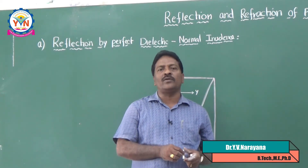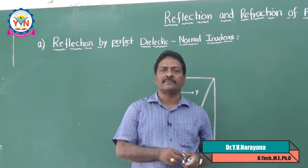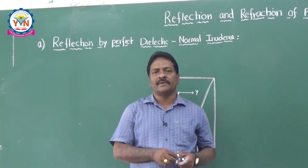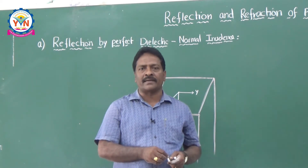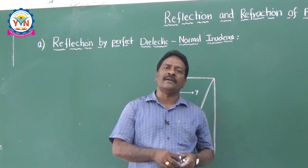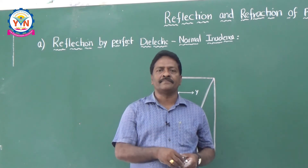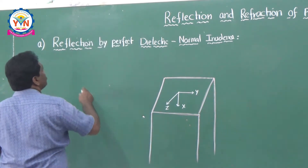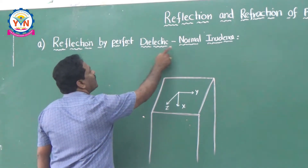In this class we are going to discuss the reflection of electromagnetic waves by a perfect dielectric at normal incidence. We have already discussed the normal incidence case for a perfect conductor, where we concluded that whenever electromagnetic waves hit the surface of a conductor, the entire wave is reflected back. Now let us see what happens when electromagnetic waves touch a perfect dielectric at normal incidence.